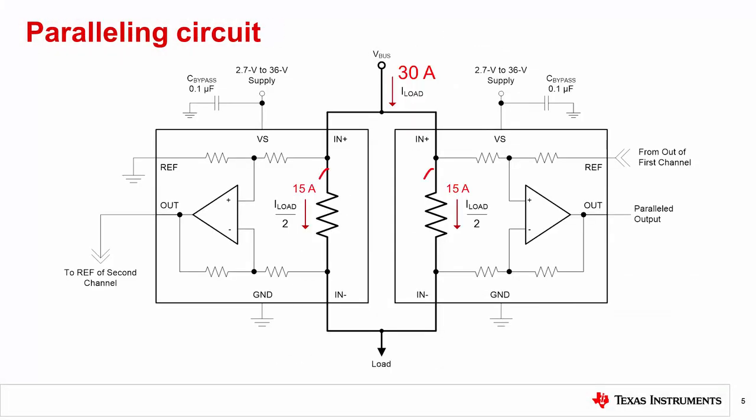Some of our current sense amplifiers feature integrated shunt resistors. The INA250, for example, is one such device which can handle 15 amps of continuous current through the shunt. If your application requires higher currents to be measured, a paralleling circuit can double the current detection capacity.